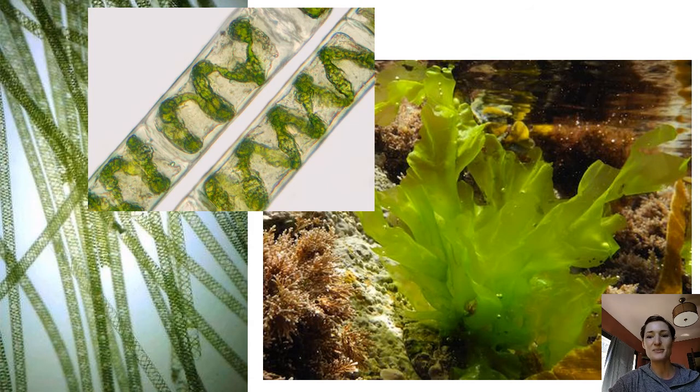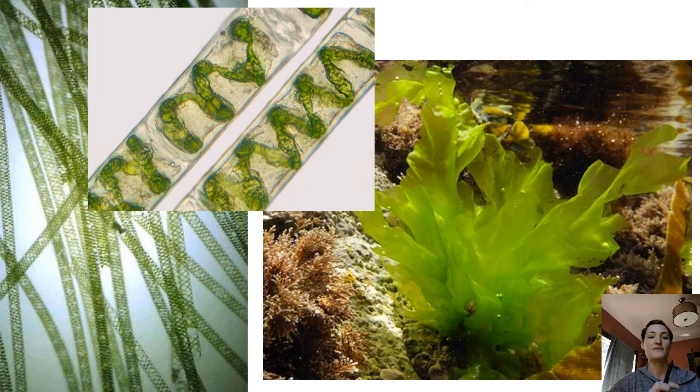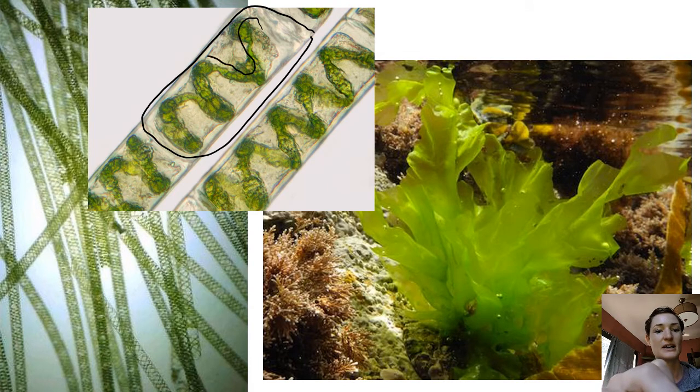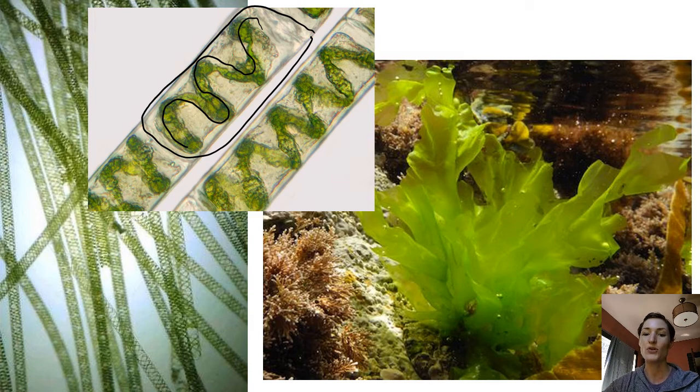Here's some pictures of some green algae. We have on the left Spirogyra, that is a unicellular green algae that forms these filamentous colonies. So each of these is an individual, but it then is forming in these colonies. It's called Spirogyra because of these spiral chloroplasts that it has. On the right is a multicellular green algae that's sea lettuce or Ulva.